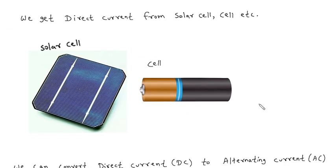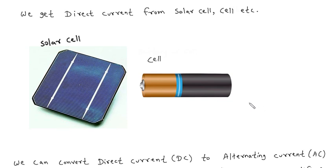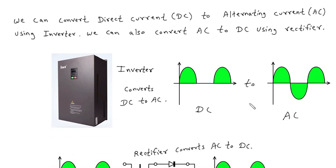We get direct current from solar cell, cell, etc. We can convert direct current, DC, to alternating current, AC, using inverter.